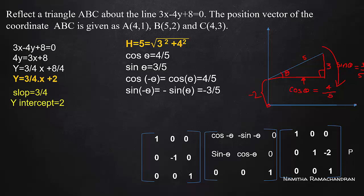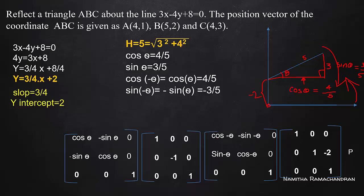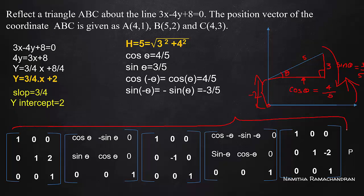Then reflection with respect to the x-axis: the y value is negated, so this is the reflection matrix. After that, reverse rotation — same angle but anticlockwise direction, so the angle is positive. The reverse rotation matrix uses cos theta, minus sin theta, sin theta, cos theta, with positive angle. Then reverse translation: y translation parameter is positive 2, x translation is 0. This is the entire reflection with respect to the line — this is the composite transformation matrix, and the matrices are applied in order.